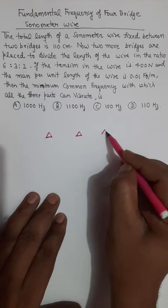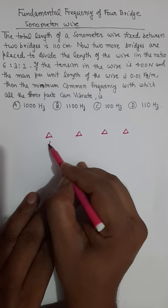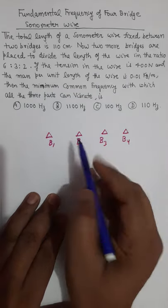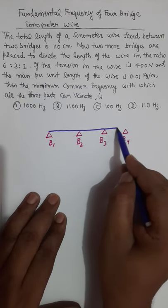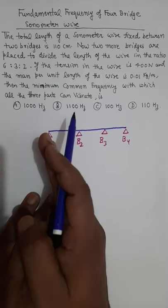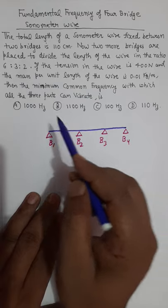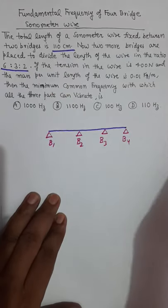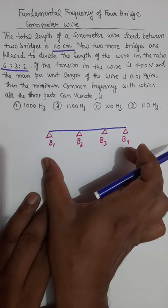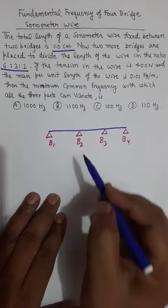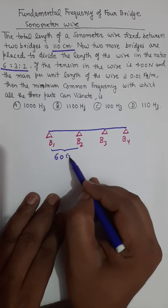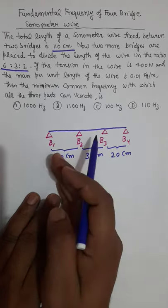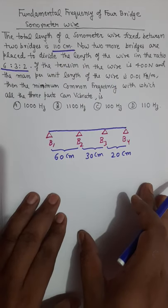We have four bridges on the sonometer wire: bridge number 1, bridge number 2, bridge number 3, and bridge number 4. Over these four bridges we have a sonometer wire, and the lengths are given in the ratio 6:3:2. The total length is 110 centimeters. So by mathematics, this length will be 60 cm, this length 30 cm, and this one 20 cm — ratio 6:3:2 with total 110 cm.